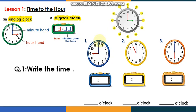Remember: if the long hand — the minute hand — points to number 12, you're going to write two zeros, just as shown here. I'll give you some time to look at these clocks, read the time, and write it down on a piece of paper. Take your time, don't be in a hurry.